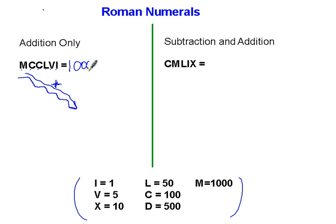I put 1000 plus 200, two C's is 200, plus 50, plus 5, plus 1. So that answer is 1256. 5 plus 1 is 6, so 1256 would be the answer.